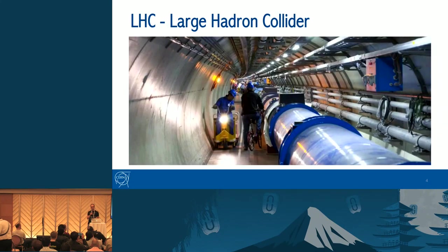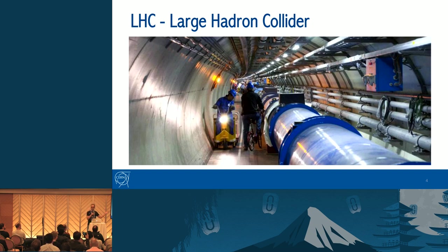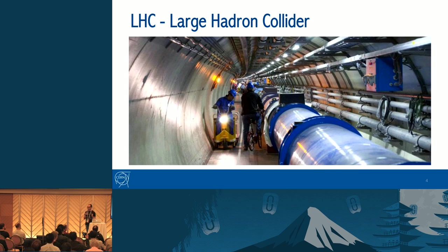For all this fundamental research, CERN provides different facilities to scientists — for example, particle accelerators like the Large Hadron Collider, the biggest machine in the world. This is a ring with 27 kilometers in diameter. It crosses two countries and is 100 meters underground. It accelerates two particle beams that travel near the speed of light, and they collide in four different points where we have detectors.